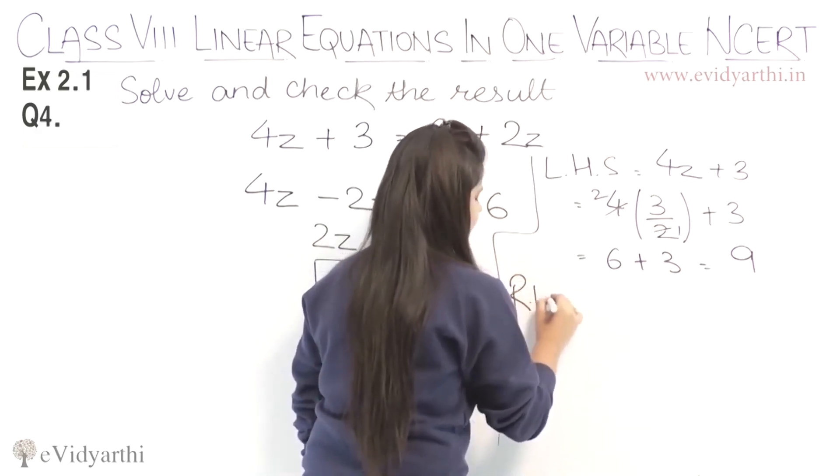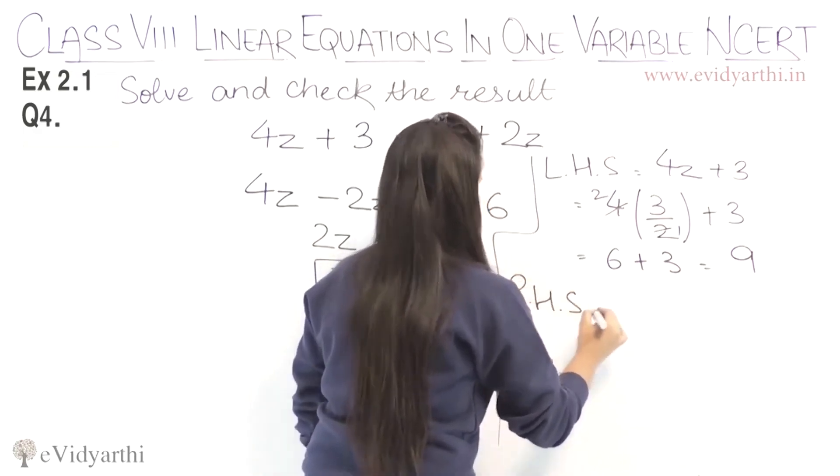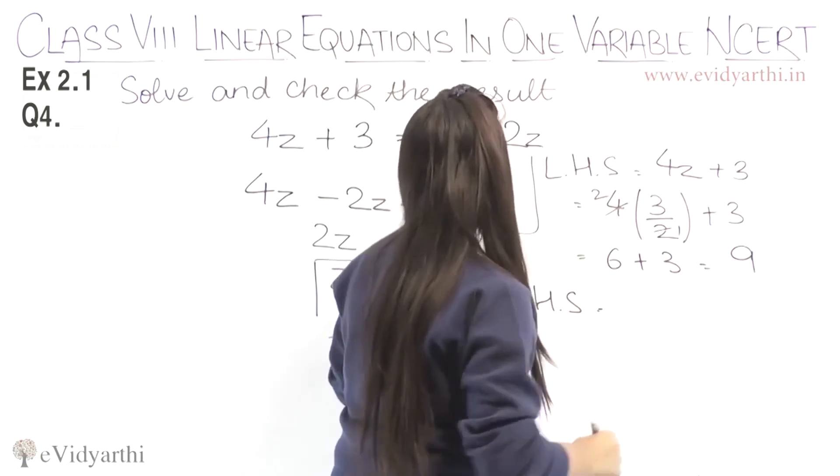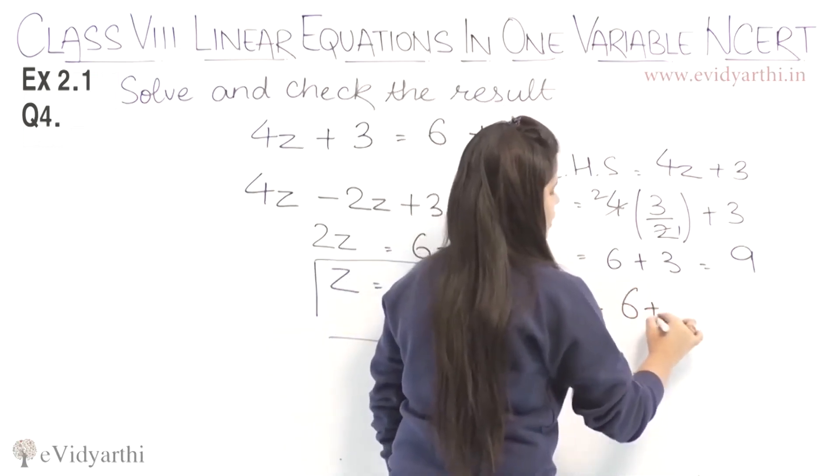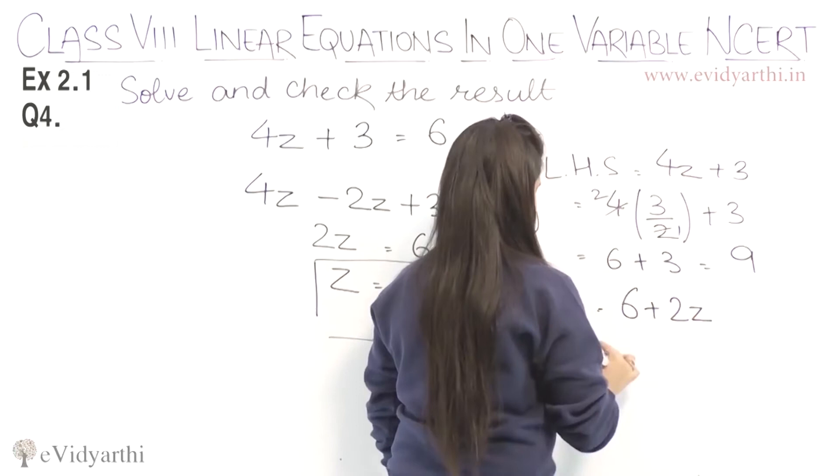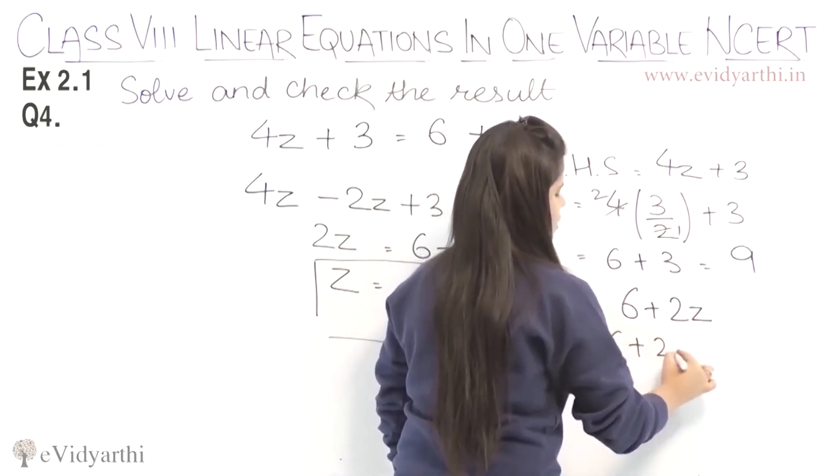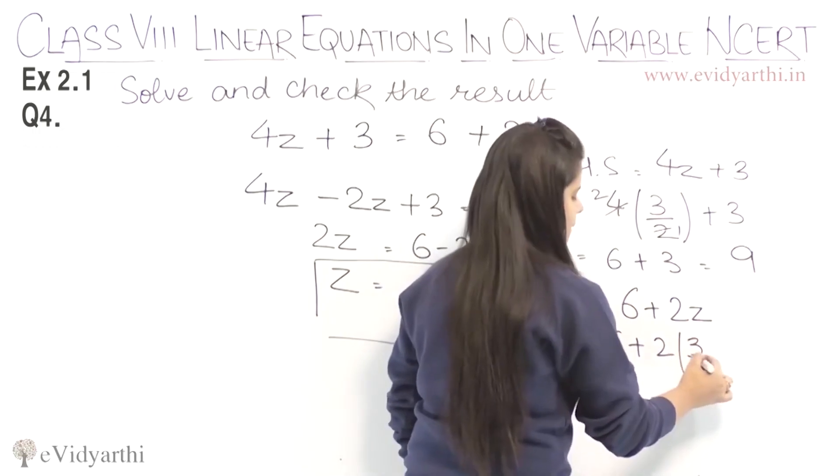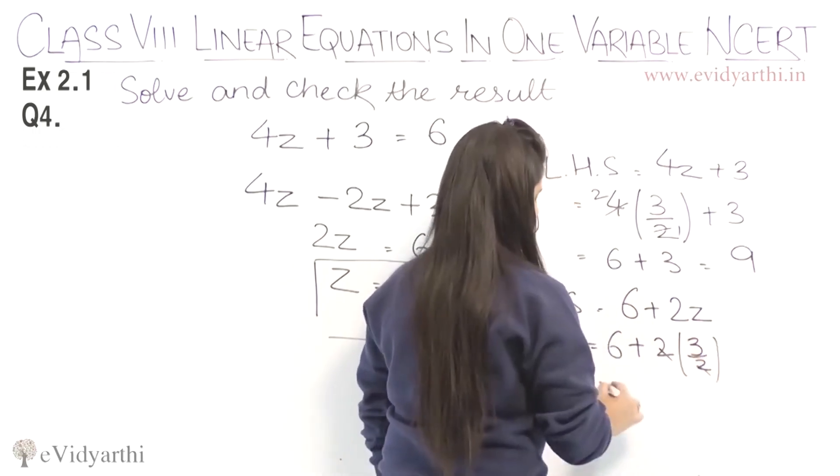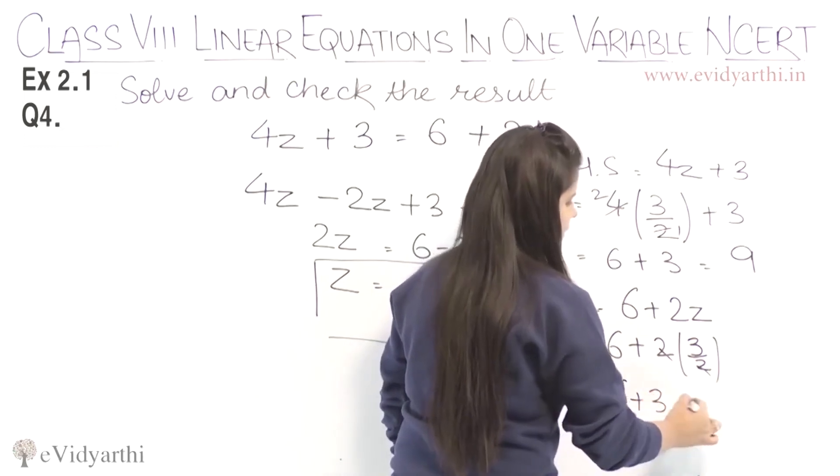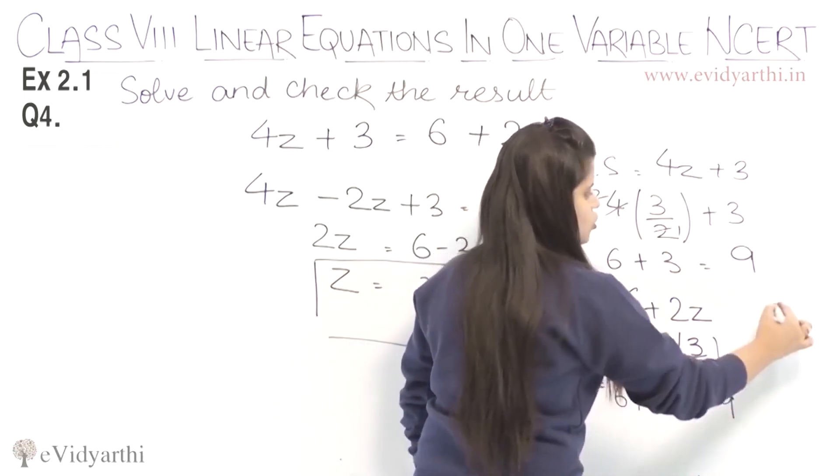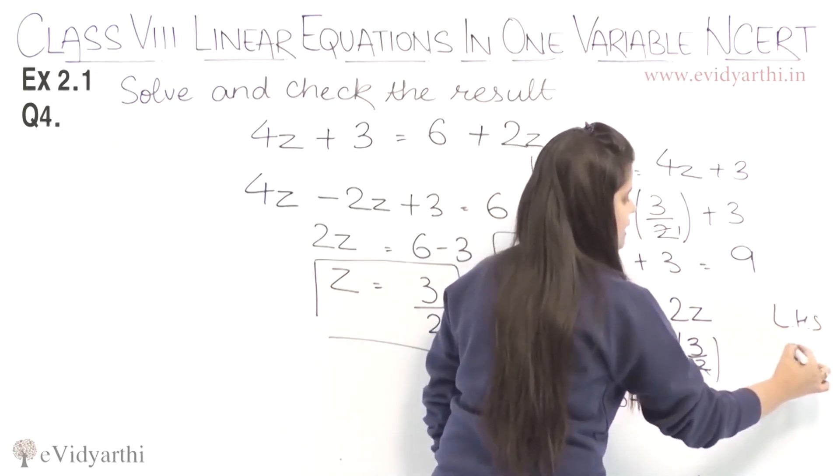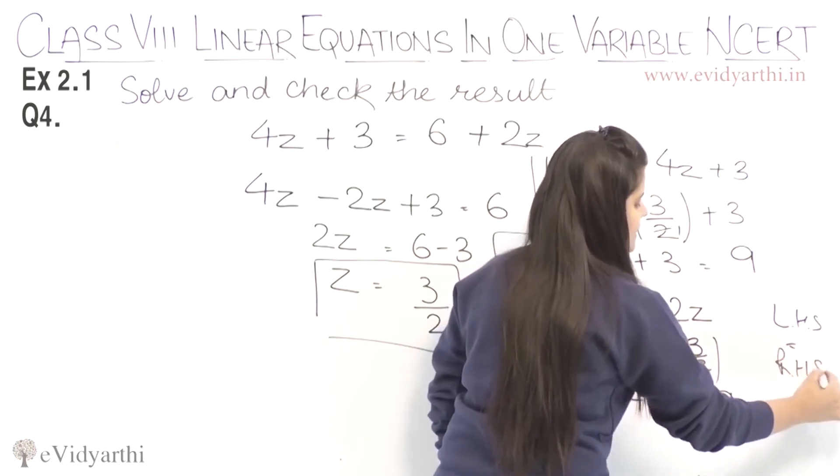Now moving to the right-hand side. Right-hand side we have 6 plus 2z. So 6 plus 2 times z, putting the value 3 upon 2. When we do the calculation, we'll get 6 plus 3 which is 9. So again, left-hand side is equal to the right-hand side.